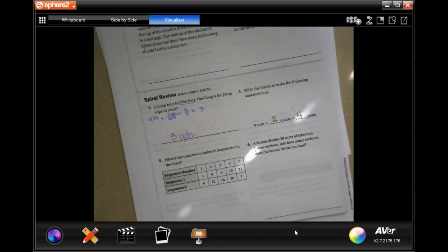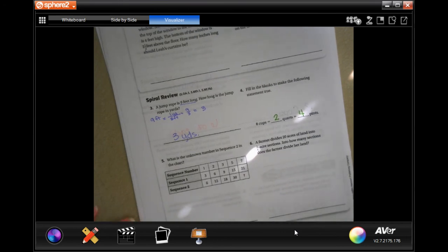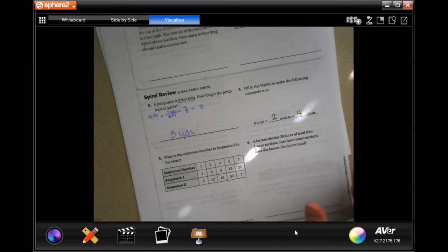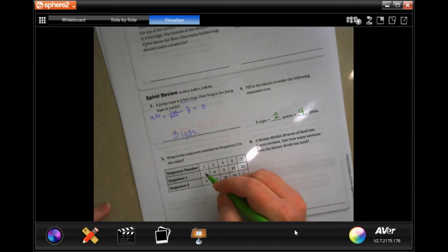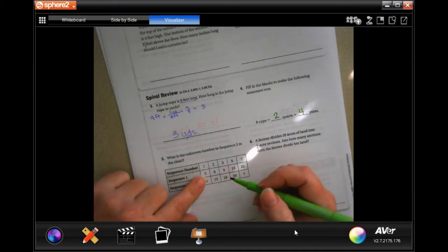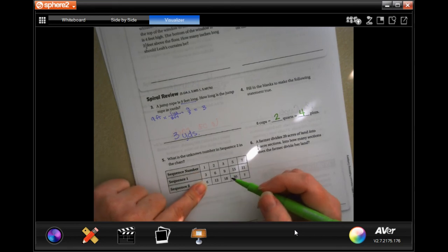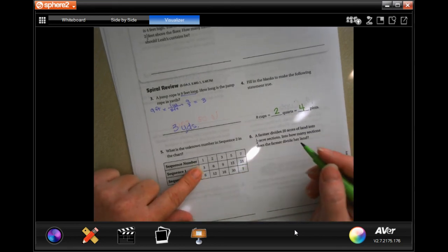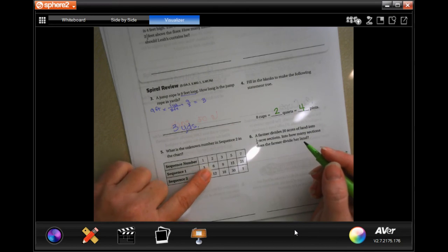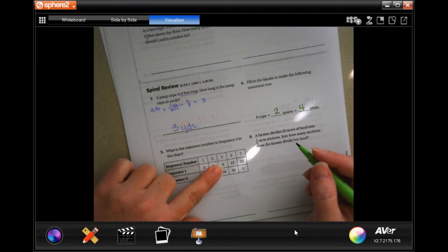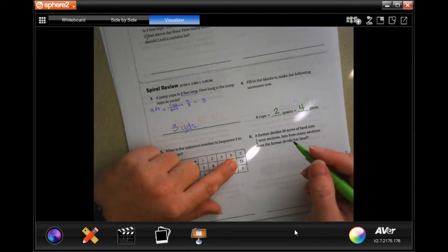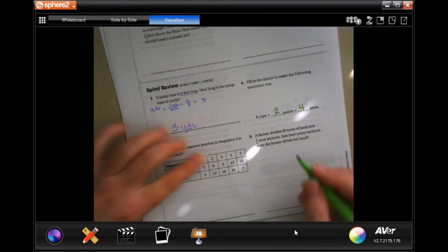All right, the unknown number in sequence two. What is the unknown number in sequence two in the chart? Let's see how we're getting from sequence one to sequence two. I could add three or I could multiply by two. Three plus three is six, six plus three is not twelve, it's nine. So three times two is six, six times two is twelve, nine times two is eighteen, that's right. Twenty-one times two, well that's forty-two.